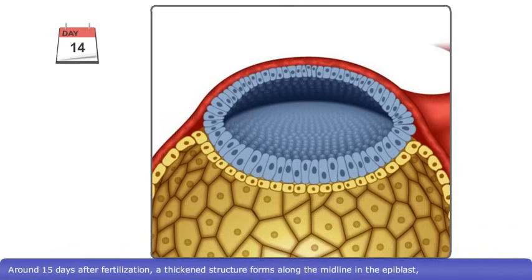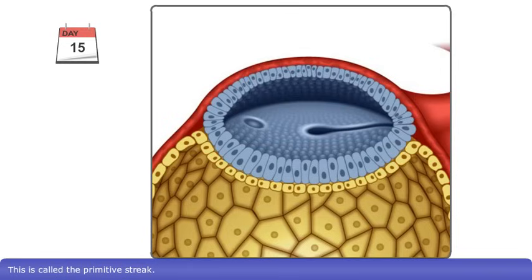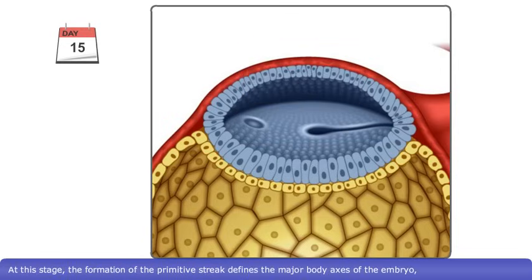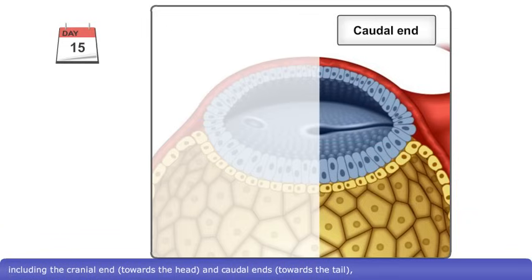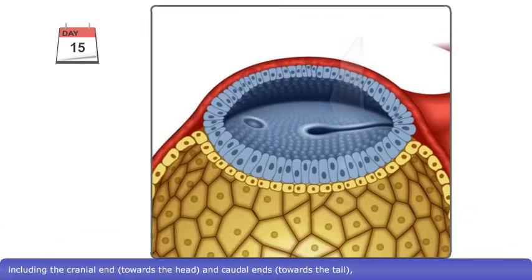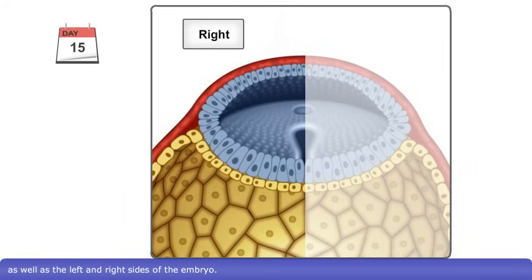Around 15 days after fertilization, a thickened structure forms along the midline in the epiblast near the caudal end of the bilaminar embryonic disc. This is called the primitive streak. The formation of the primitive streak defines the major body axes of the embryo, including the cranial end towards the head and caudal end towards the tail, as well as the left and right sides of the embryo.